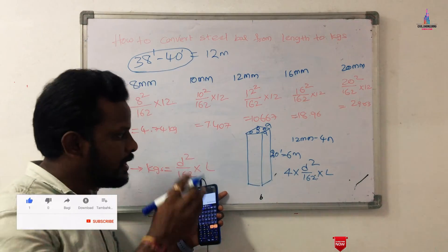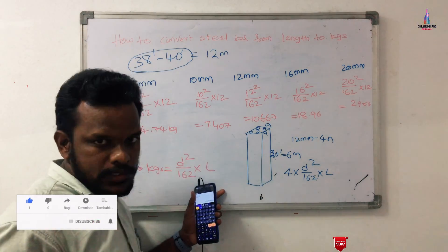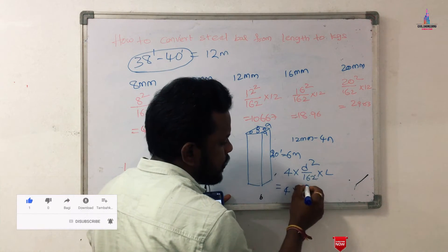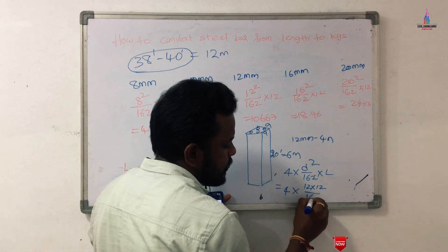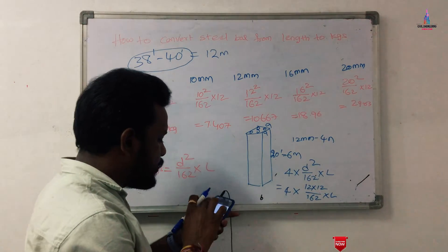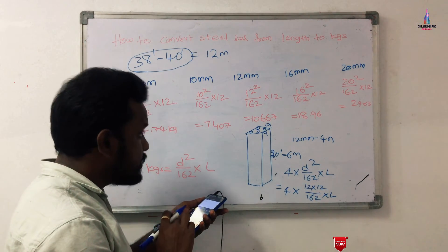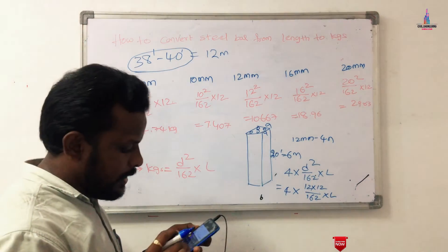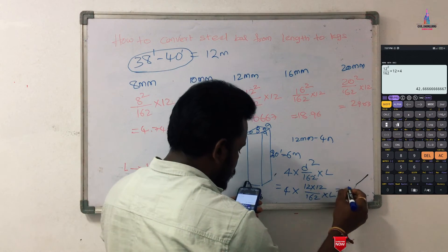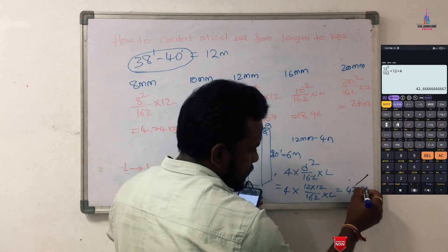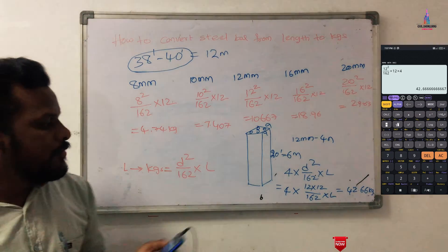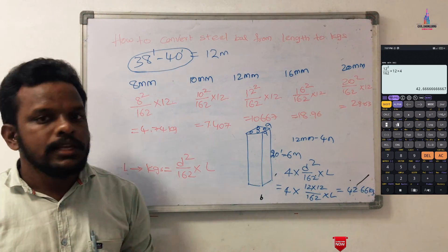With 4 bars present, the formula becomes: 4 × d² ÷ 162 × L for the vertical reinforcement of the column section. Substituting: 4 × (12 × 12) ÷ 162 × 6. We already calculated that 12² ÷ 162 × 12 equals 10.667 kg. Adjusting for 6 meters and multiplying by 4, the final value is approximately 42.66 kg. In this way, you can easily convert from length to weight in kg.